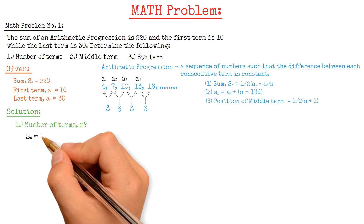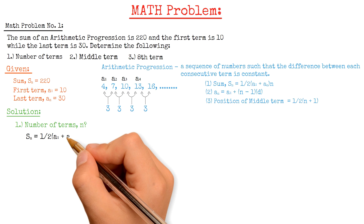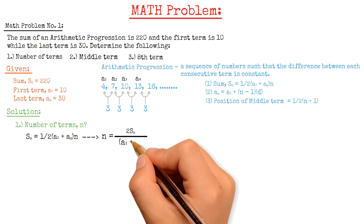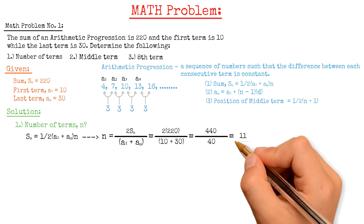To solve this, we will use the formula: Sn equals one-half multiplied by the sum of the first and last term, multiplied by n. Rearranging to solve for n, we get n equals 2Sn divided by the sum of the first and last term. Plugging in all the values, the number of terms n equals 11.